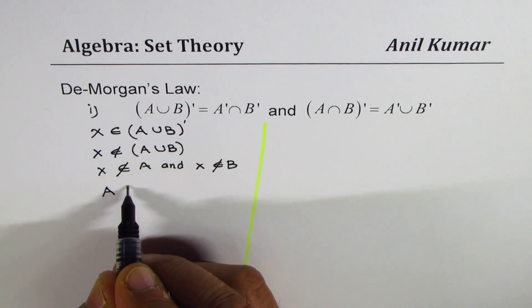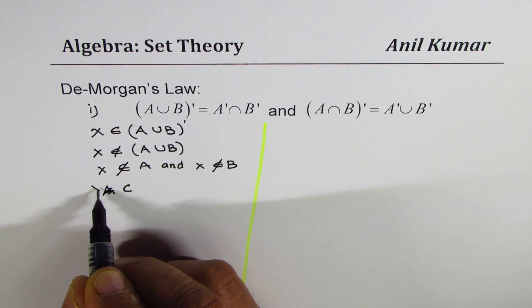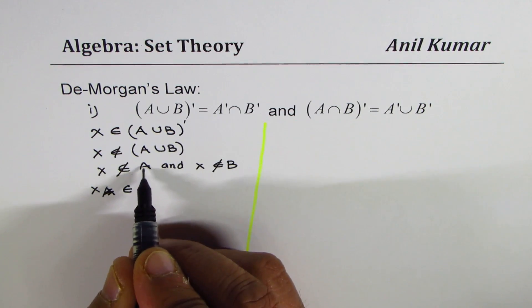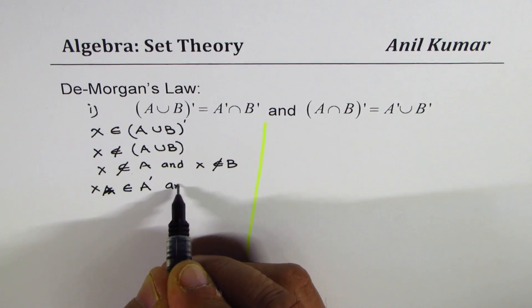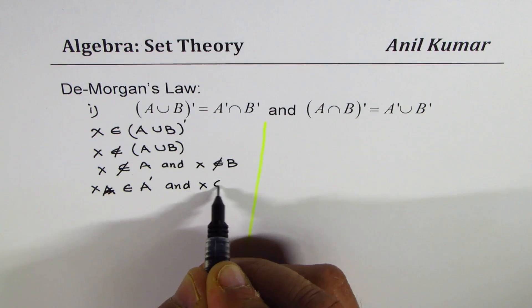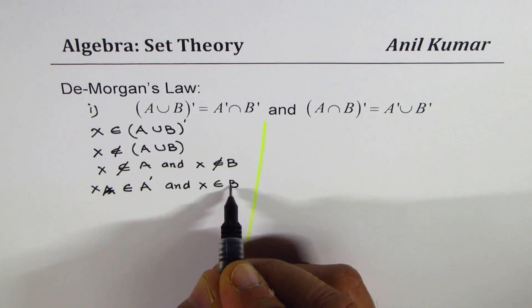That means x belongs to complement of A and x belongs to complement of B.